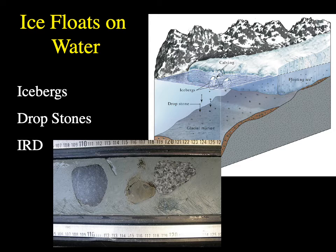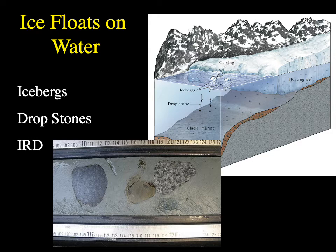As icebergs raft out into lakes or the ocean, the ice eventually melts and drops all its sediment. These are called drop stones. In a core of deep-sea sediments, most material is fine-grained mud, but occasionally very large cobbles appear — the only way to get them into the deep ocean is to have them rafted out on icebergs. This gives them another name: IRD, or ice-rafted debris.